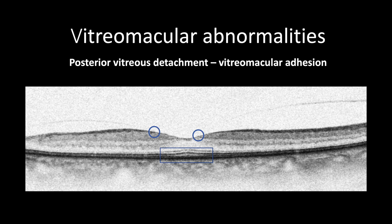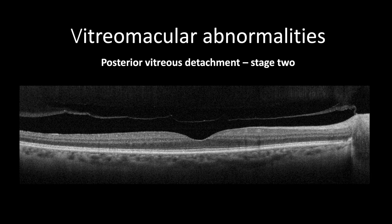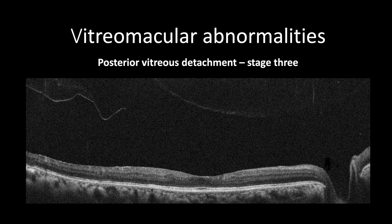In contrast, in stage 2, the posterior cortical vitreous will detach from the fovea completely, but still attached to the optic nerve. In stage 3, there is a complete separation of the vitreous even from the optic nerve.